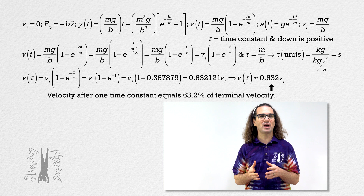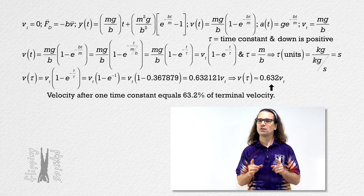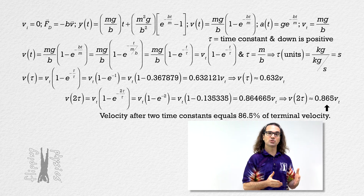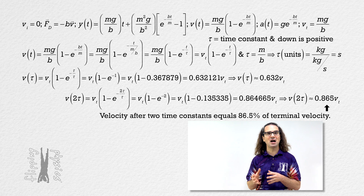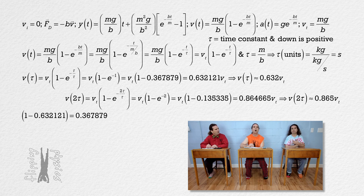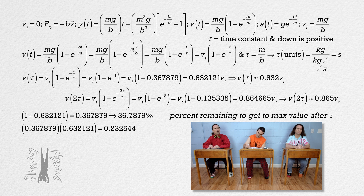The time constant is the time it takes for the velocity of the falling object to reach 63.2% of its terminal velocity. The time constant is a general way for us to define the time it takes for an exponential equation to get to a percent of its maximum value. The time constant represents the time it takes for a 63.2% change. For example, after a total of two time constants, the velocity has reached 86.5% of its terminal velocity. After one time constant, you have 0.367879 or 36.7879% remaining. Multiply that by 0.632121 to get 0.232544.